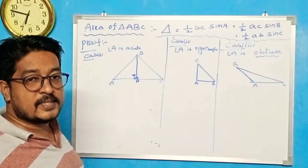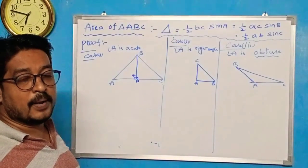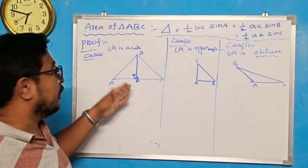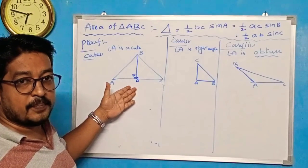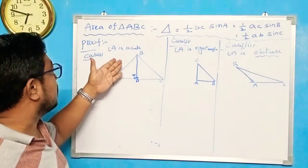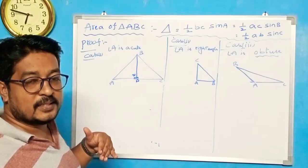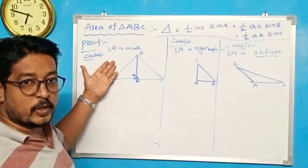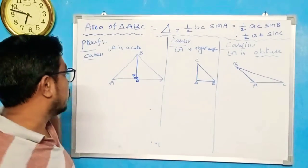In this right angle, you have a property. The property of the right angle is the Pythagoras theorem. Pythagoras theorem: hypotenuse squared is equal to side squared plus side squared.